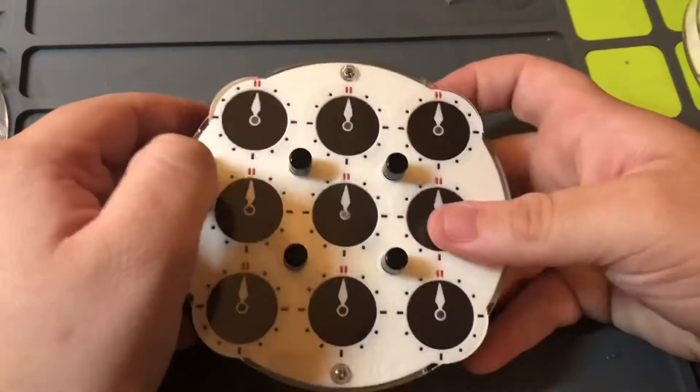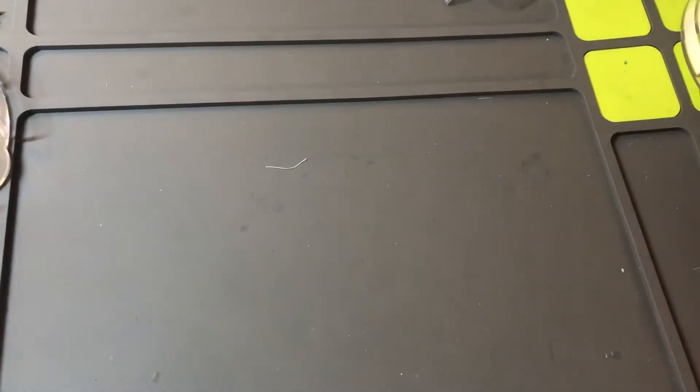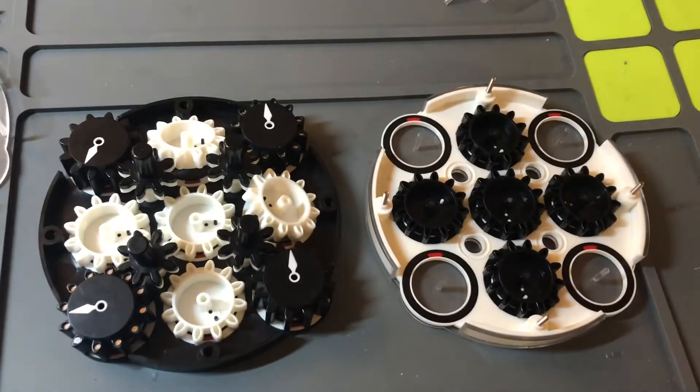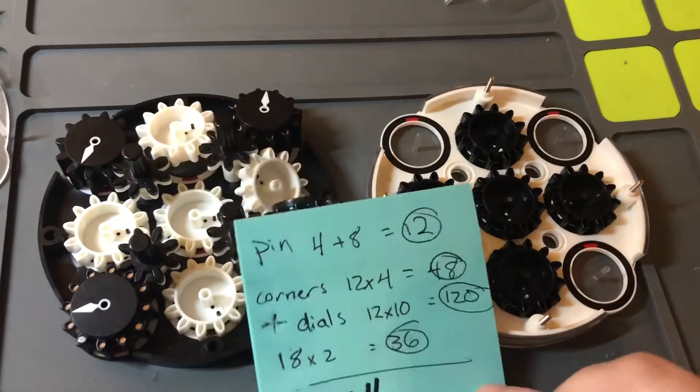So let's take a look at a disassembled one here. So here we have a disassembled clock, we all know what that looks like, and let's talk about how we get to 204 magnets.